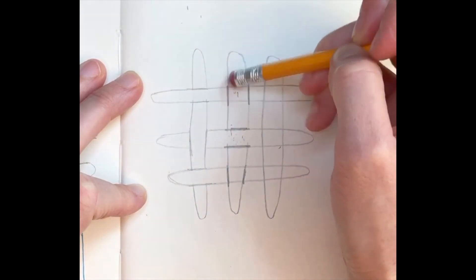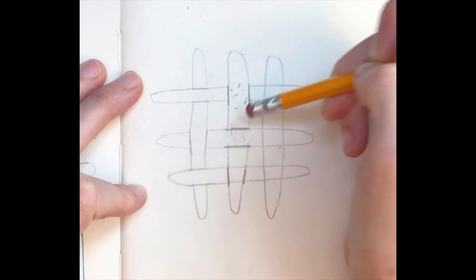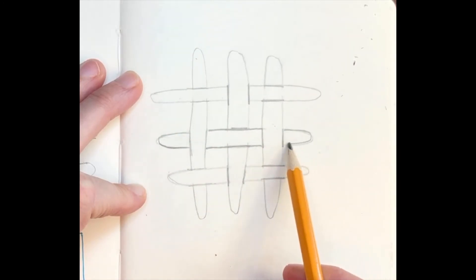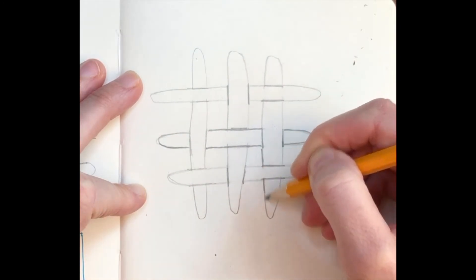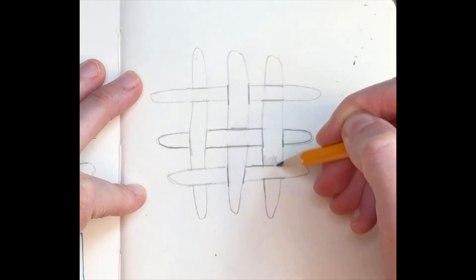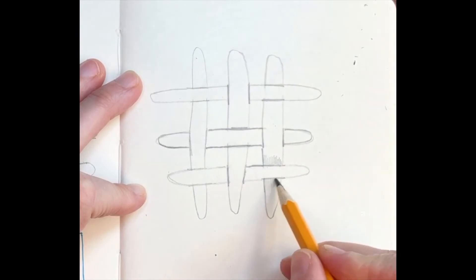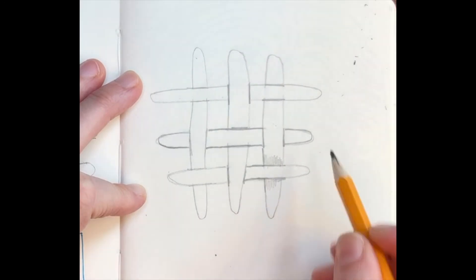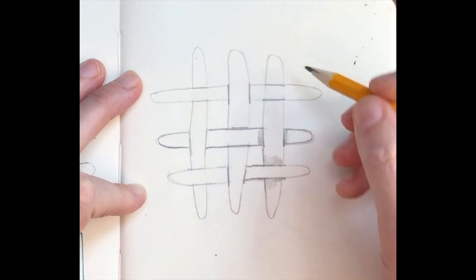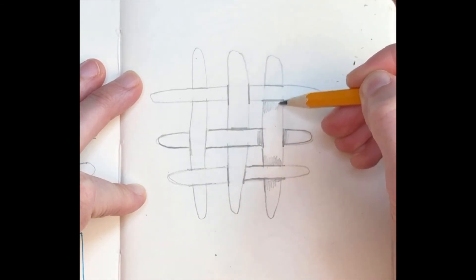To make my doodle stand out and look a little bit more dimensional I'm going to outline some of the shapes I've made and also I'm going to go in and put in some shading and I'll put the shading next to or behind the overlap. This shading makes the things that are in front stand out.